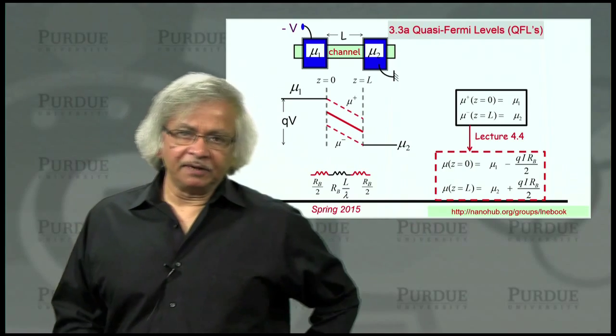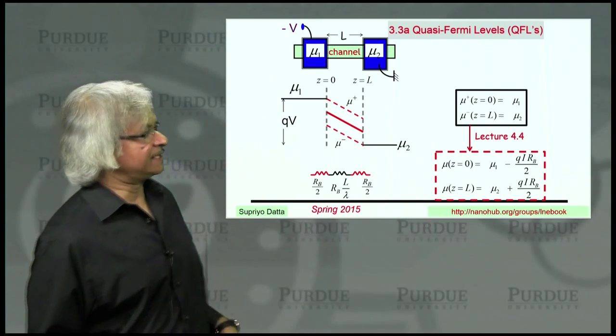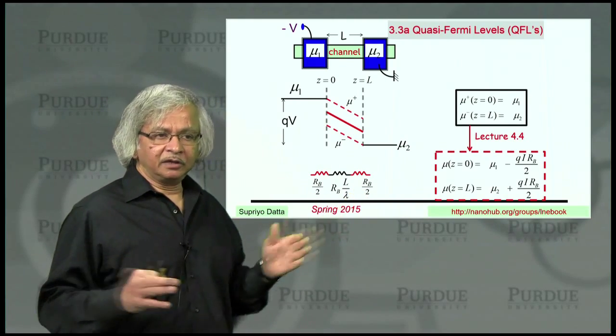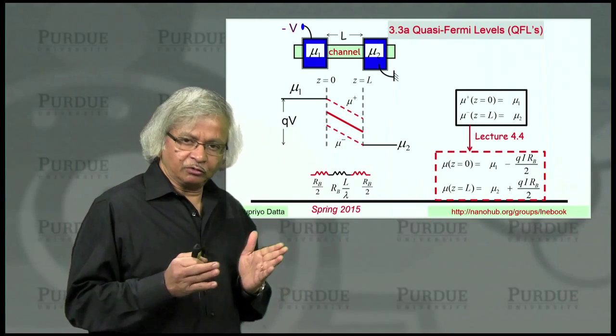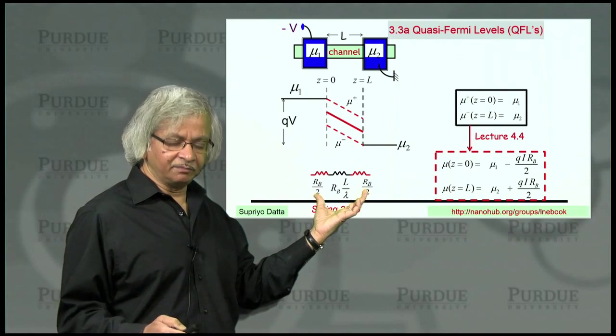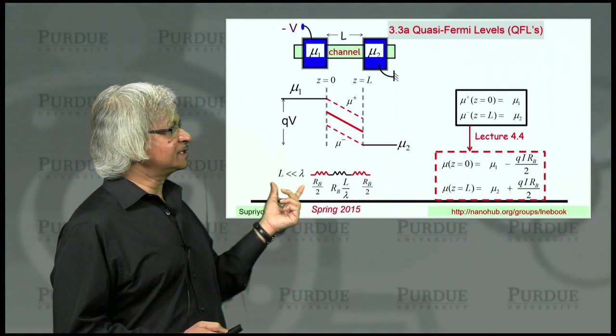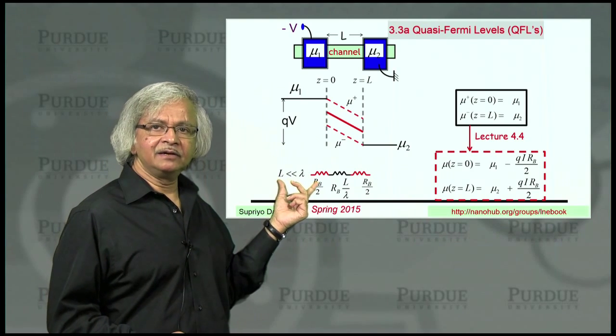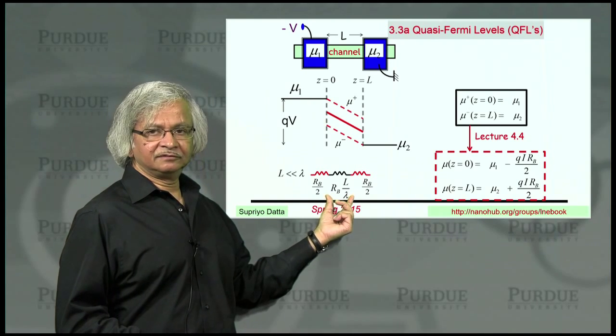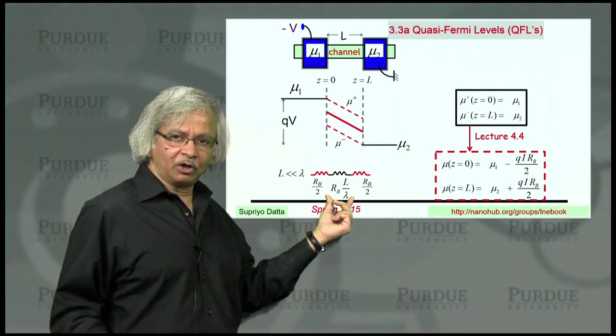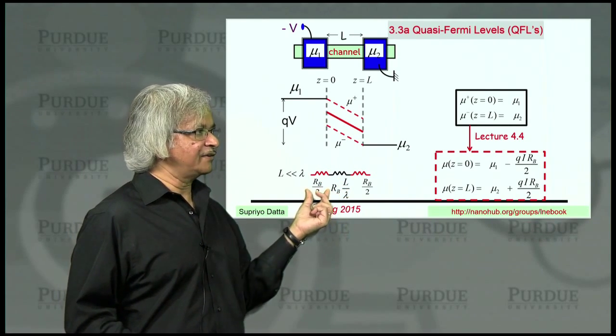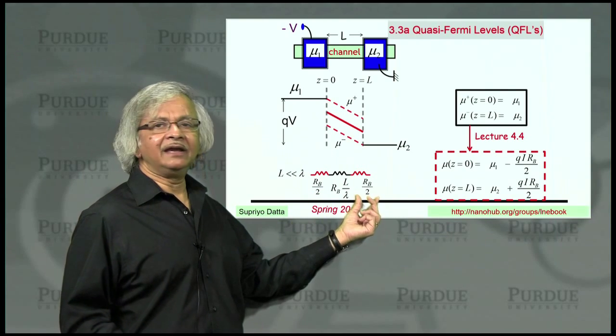For this purpose, it's useful to start from the ballistic end. This is the picture for any channel, which could be very short or many mean free paths long. In the ballistic limit, where the channel length is much less than a mean free path, this channel resistance is very small because L is much less than lambda. So the entire resistance is just the interface resistance.